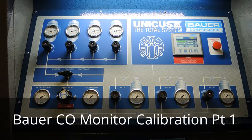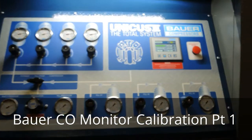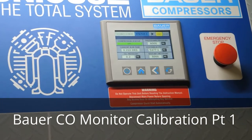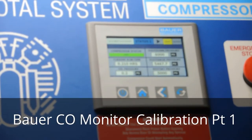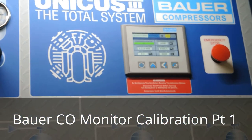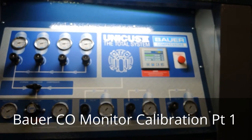This is the monitor. The touchscreen is located on the front of the Unicus here. This is where we'll actually go through our calibration. The CO monitor itself is located on the Unicus machine on the right hand side, and we'll go over there and point out a couple things.